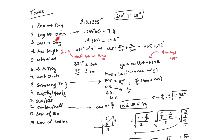To go from degrees-minutes-seconds back to degrees, take the angle measurement with degrees, minutes, and seconds and type it into a calculator using this method: fill in the degrees, put the minutes over 60, and put the seconds over 3600. The 60 and 3600 are constants that never change. Type it all in and you'll get a decimal result.